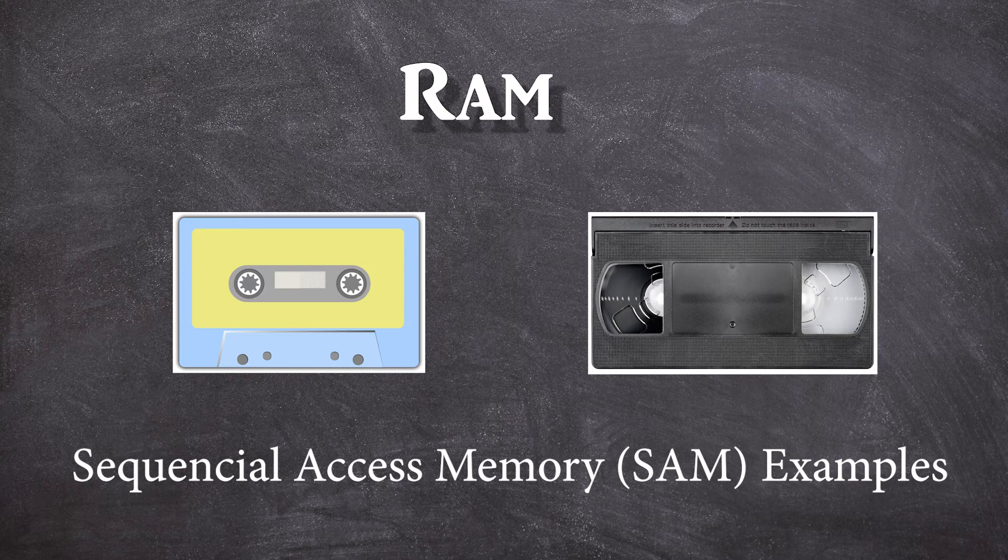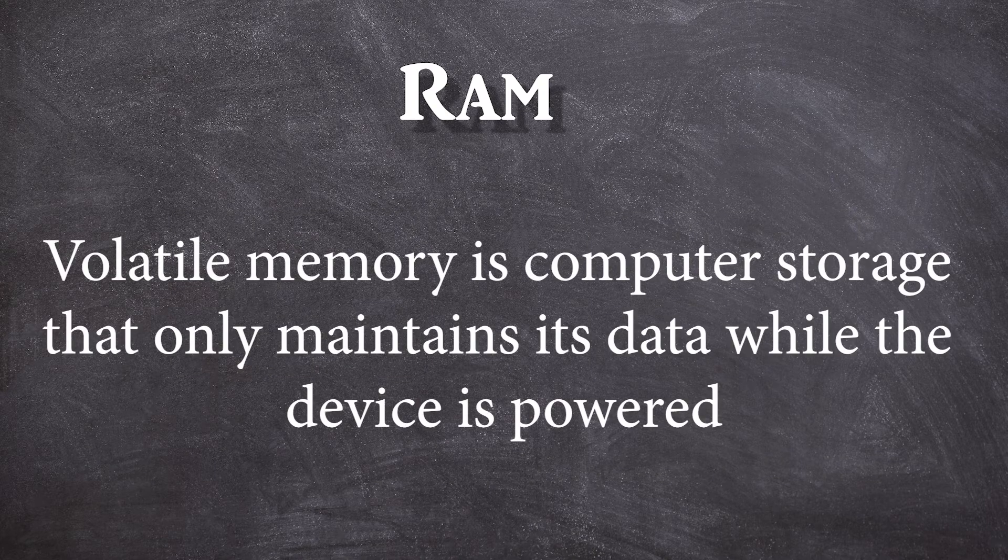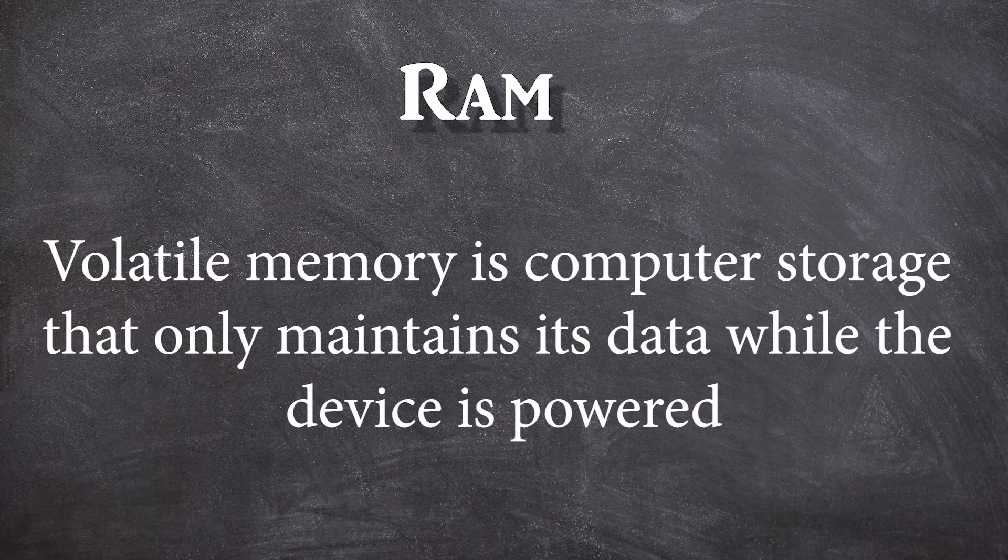That would be sequential. You have a seek time in trying to find the right location, like a cassette tape or C2 tape where you're trying to fast forward or rewind until you get to the desired location. One more detail is that RAM is volatile. As long as you have power on your machine, all the data will remain there. But if the power goes off, you're going to lose all of it.